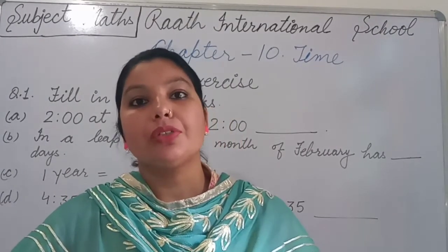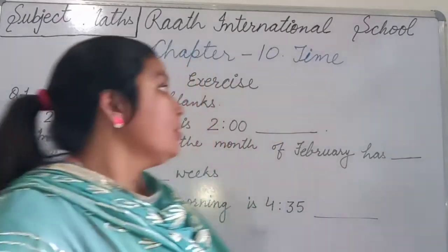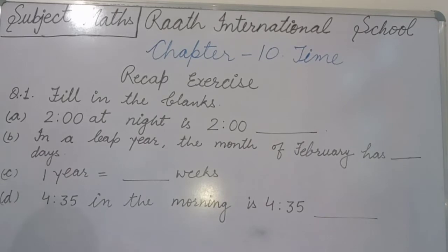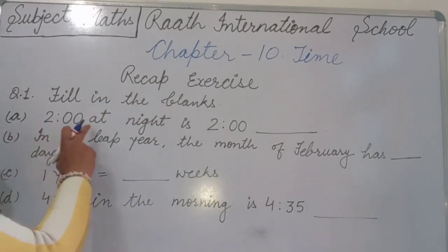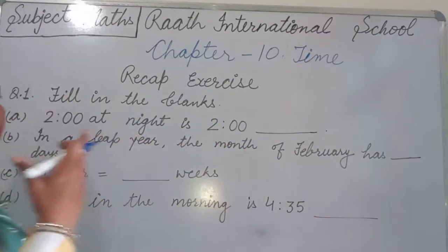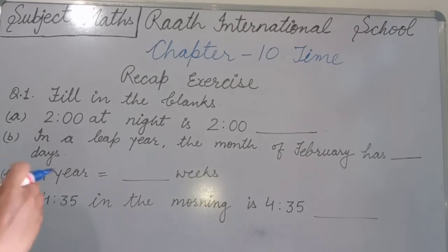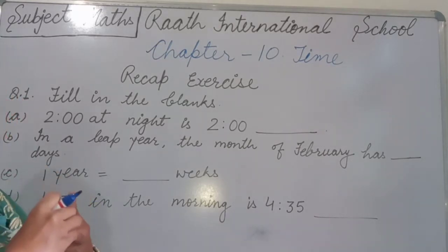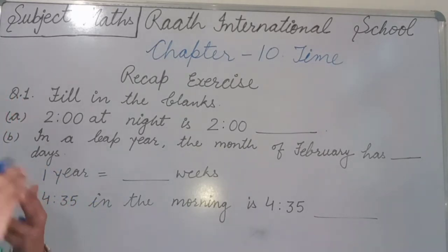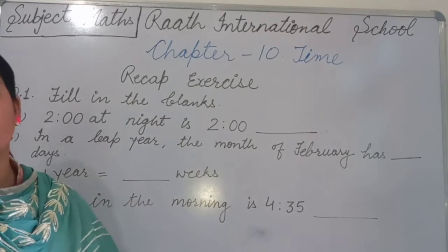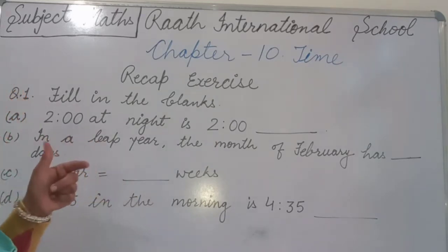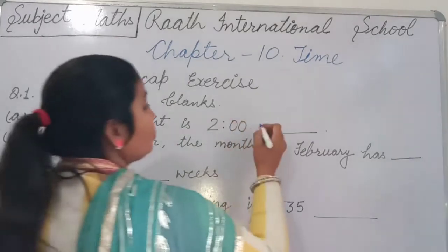Now we start the recap exercise. Question 1 is fill in the blanks. Part A: 2 at night — you might think it is PM, but 12 midnight marks the start of a new day, so times after midnight are AM. Therefore, 2 at night is 2 AM.